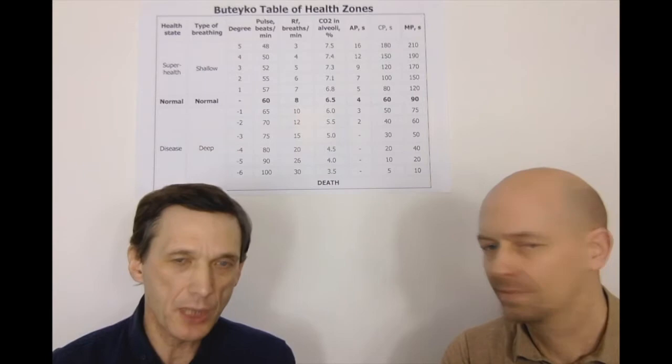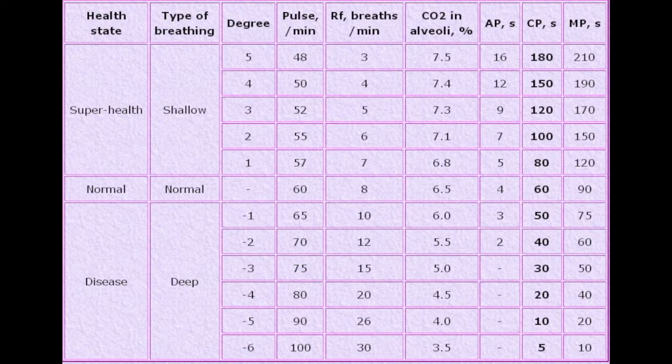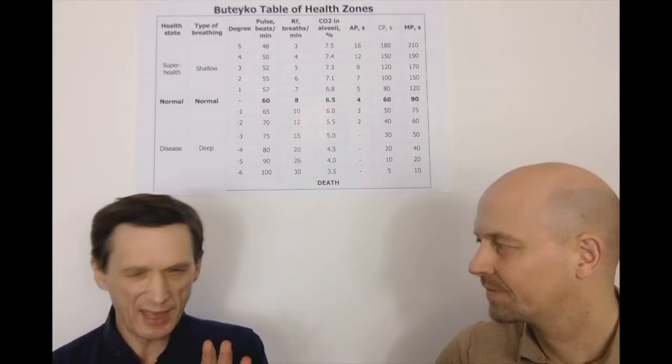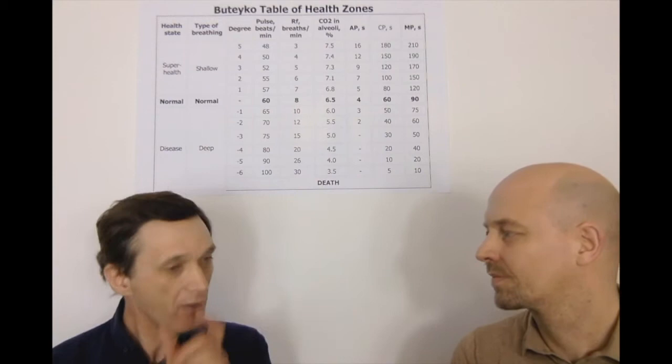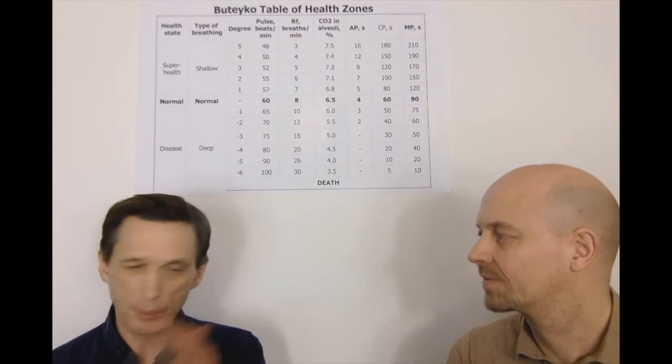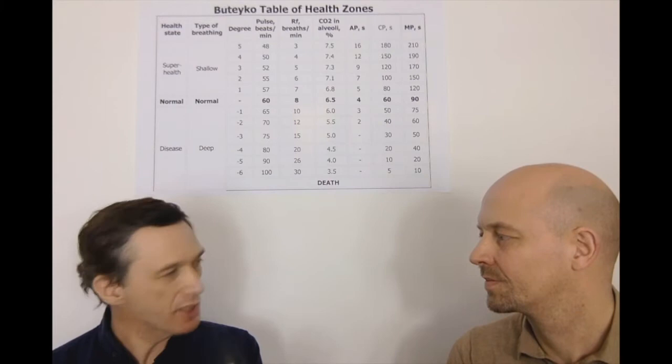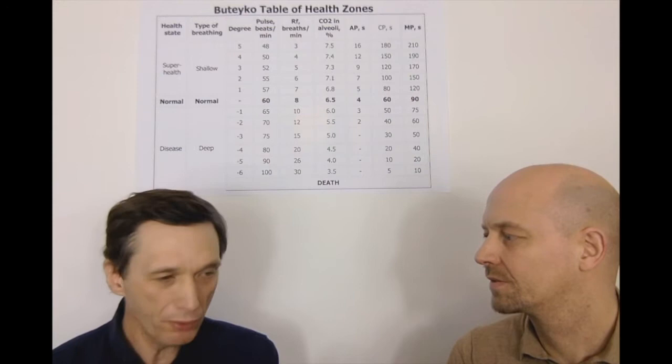I can show some of them here. This is a photo of Dr. Buteyko with the Table of Health Zones. This photo is from his lecture at Moscow State University, which was published in a very popular Soviet journal called Science and Life — something like Scientific American. I remember when I was a kid, I loved to read this journal because it contained all types of discoveries in biology, chemistry, math, chess games, mathematical puzzles, physics, quantum physics, nuclear physics — a lot of research.